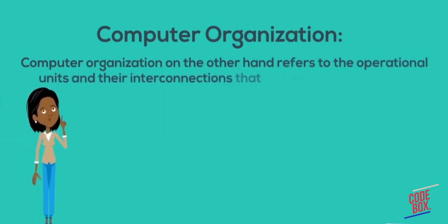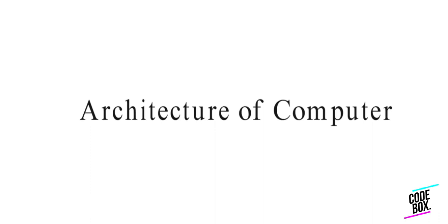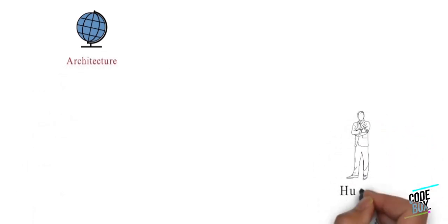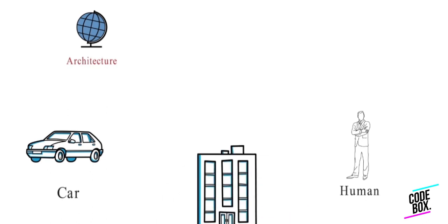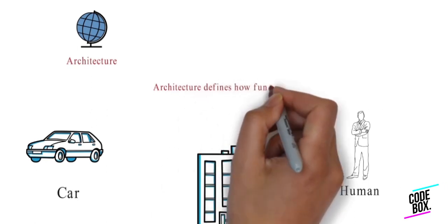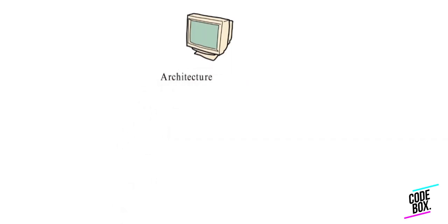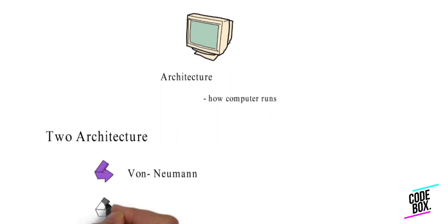Computer Organization refers to the operational units and their interconnections that realize the architecture. The second phase of computer architecture includes von Neumann architecture and Harvard architecture.